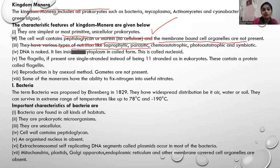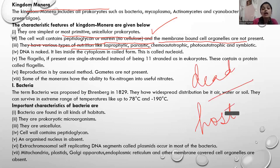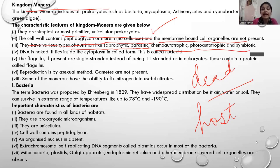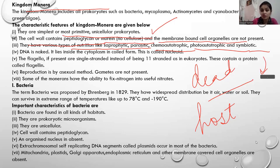They have various types of nutrition. They can be saprophytic — meaning they can feed on dead organisms; parasitic — they can feed on a host; chemo-autotrophic — they can make food by chemical synthesis; photo-autotrophic — they can derive food using light; and symbiotic — like lichens, where algae make food and fungi provide protection.